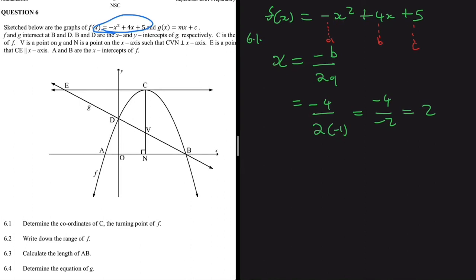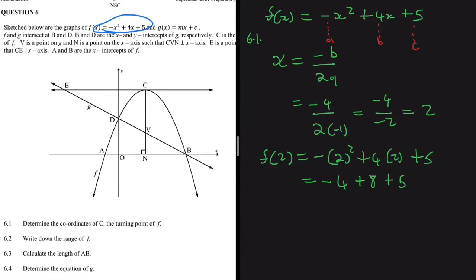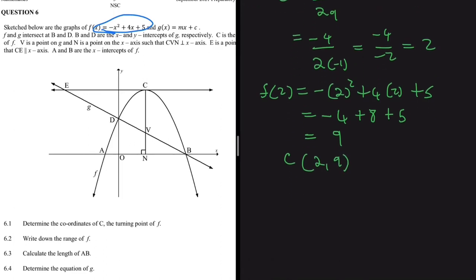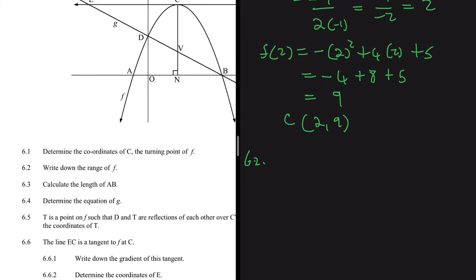Now we substitute x = 2 into our equation to find the y-value of the turning point. F(2) = -(2²) + 4(2) + 5 = -4 + 8 + 5 = 9. So the coordinates of C, our turning point, are (2, 9).